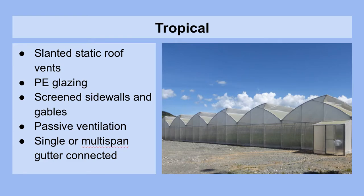Now we must take a look at tropical greenhouses. These generally have slanted static roof vents that are always open because you don't ever anticipate cold temperatures and the need to close them. They're slanted so that rainfall doesn't enter the greenhouse through these vents. They generally have polyethylene glazing and screen sidewalls and gables. They make use of passive ventilation and can be single or multi-span, usually gutter connected so that when it does rain, you can harvest this high quality water.